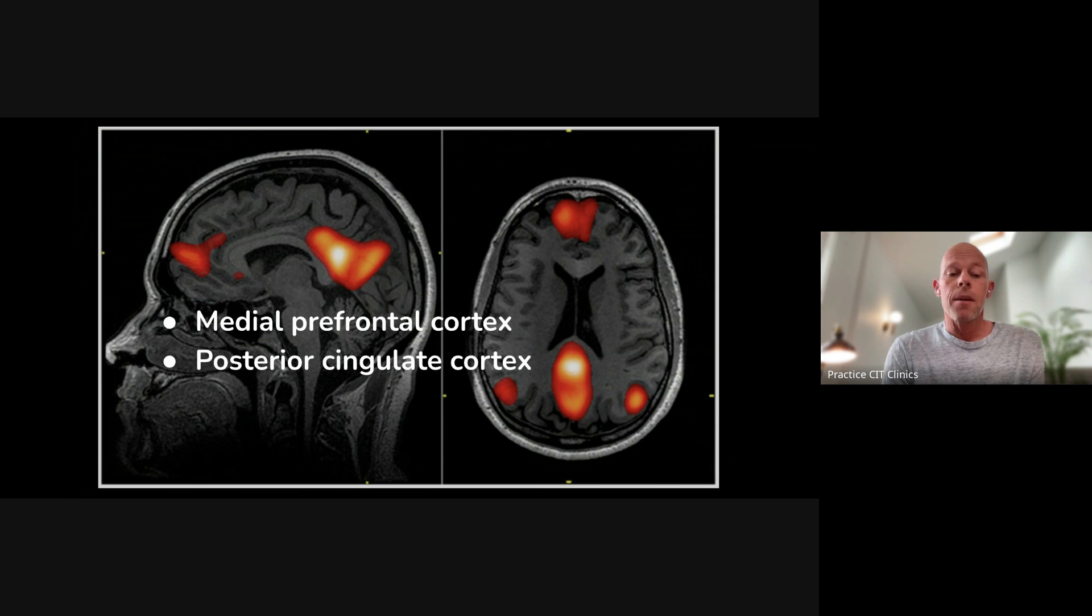And so they call this the default mode network. And we spend most of our time actually in this state. And it's accompanied by this activity in these two regions, the medial prefrontal cortex, that's the midline part behind our eyebrow, and then the posterior cingulate cortex. And so why do we care? Why am I bringing this up?